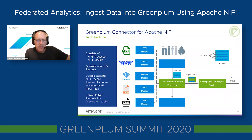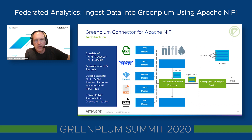Once the Greenplum processor parses the incoming flow file into individual records using these readers, it converts and transforms them into database tuples. It then batches those tuples into micro-batches and sends them to the Greenplum GPSS adapter, which is responsible for converting them to protobuf messages and sending them to the Greenplum Streaming Server for further ingestion into the Greenplum database.